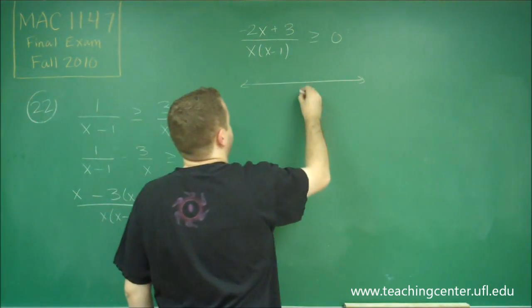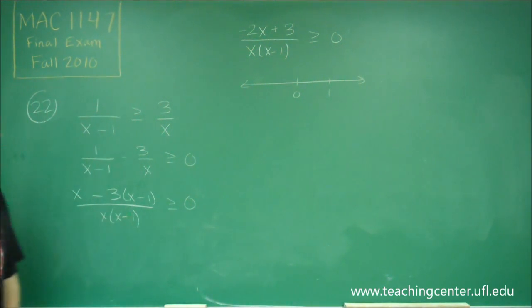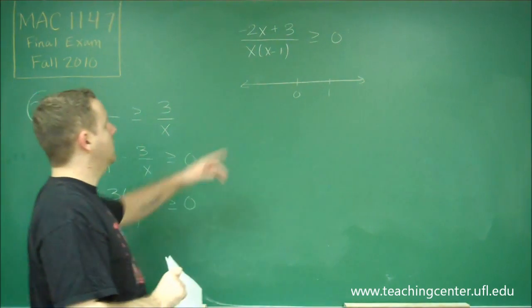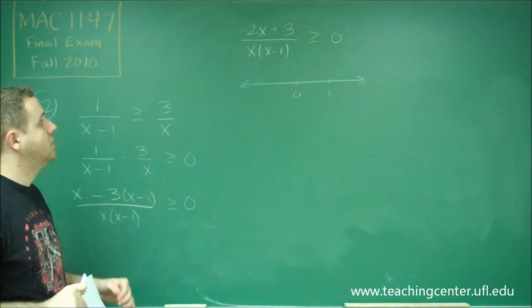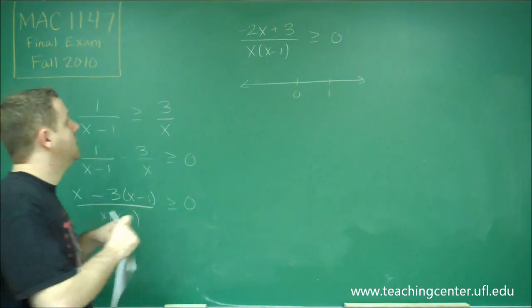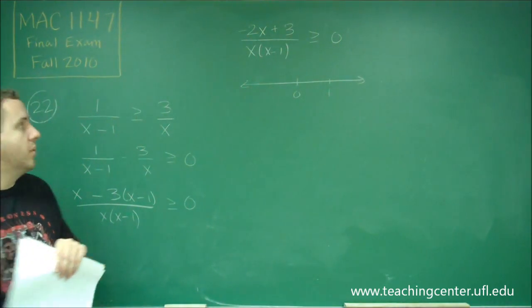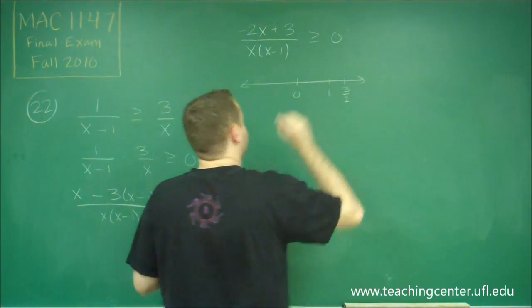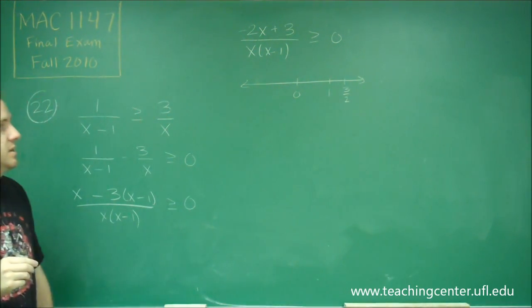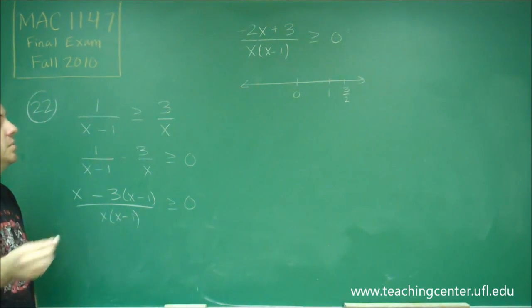The denominator is 0 when x is equal to 0 or when x is equal to 1. We need to figure out when the numerator equals 0. The numerator would be equal to 0 when x is equal to 3 over 2. So now we just need to check numbers in each range.